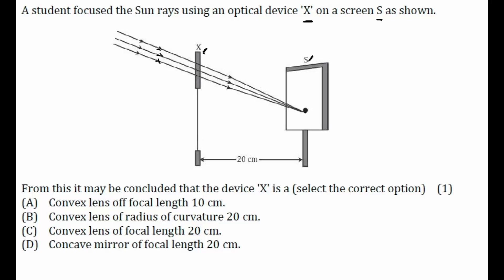All the rays got focused at a point on the screen. From this, it may be concluded that device X is: (A) a convex lens of focal length 10 cm, (B) a convex lens of radius of curvature 20 cm, (C) a convex lens of focal length 20 cm, or (D) a concave mirror of focal length 20 cm.